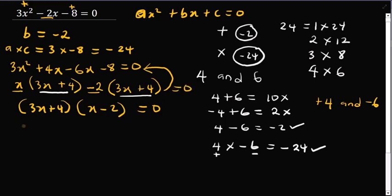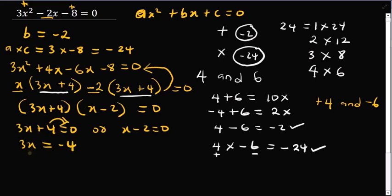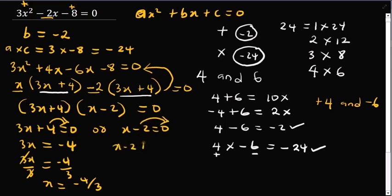Now we solve for x. From 3x plus 4 equal to 0: moving 4 to the other side gives 3x equal to negative 4, and dividing both sides by 3 gives x equal to negative 4 over 3. From x minus 2 equal to 0: adding 2 to both sides gives x equal to 2. So x has two values — negative 4 over 3 or 2 — which is exactly what we are looking for.